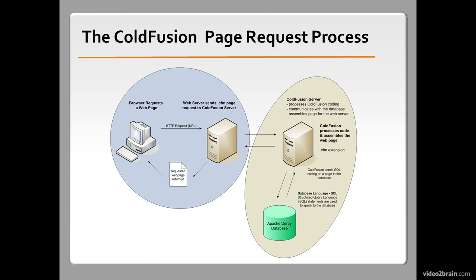ColdFusion gathers all of that information and assembles the page — that's why it's technically called a template. It isn't assembled until all of the code comes back to the ColdFusion server and ColdFusion puts the page together. Once assembled, the page gets sent back to the web server and then forwarded to the user's browser. So a ColdFusion template page is simply a page with a .cfm extension that ColdFusion has processed and sent back to the web server to go to the user's browser.